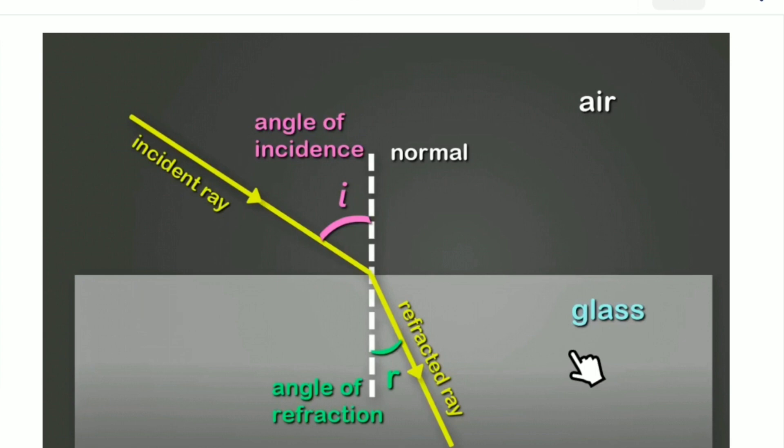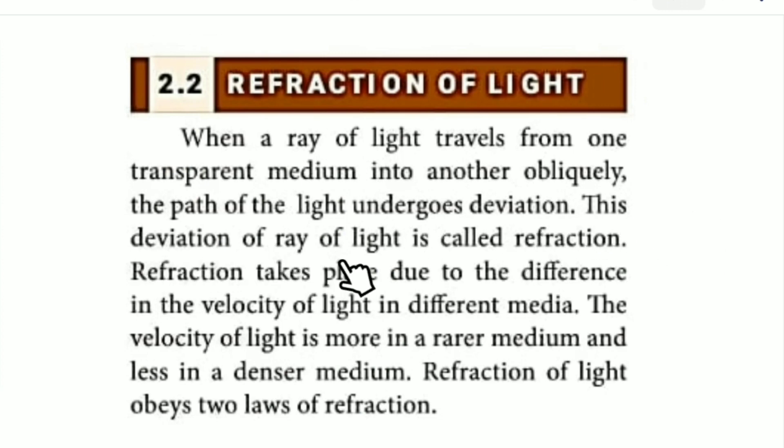When you take one medium like glass and light is incident at a particular angle, it bends and travels in a new path. This deviation of the ray of light is called refraction. Refraction takes place due to the difference in the velocity of light in different media. The velocity of light is more in a rarer medium and less in a denser medium.